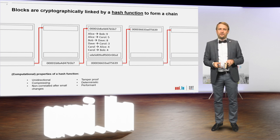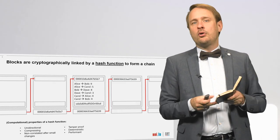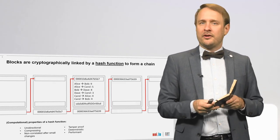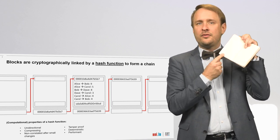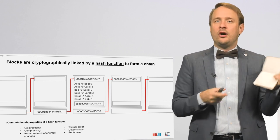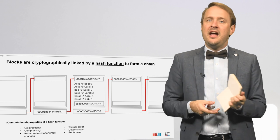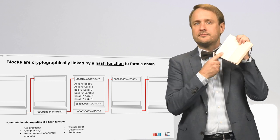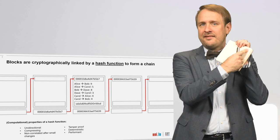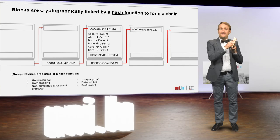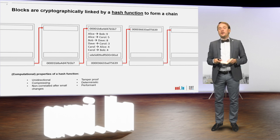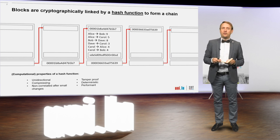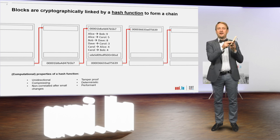On each page of our book — in each block — we have our transactions. At the end of each page, we calculate the hash value for all the content and transactions listed. We take this hash value and copy it to the top of the next page, so the hash value becomes an input for the hash value of the next block. Again, we list our transactions, calculate the overall hash value, and copy it to the next page.